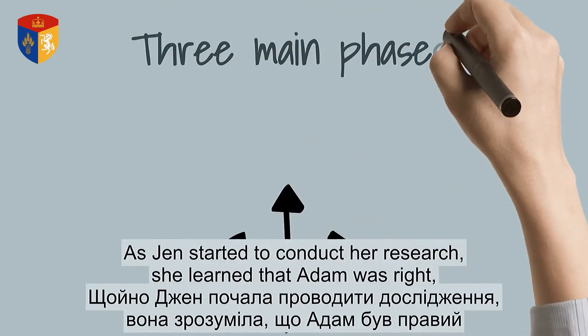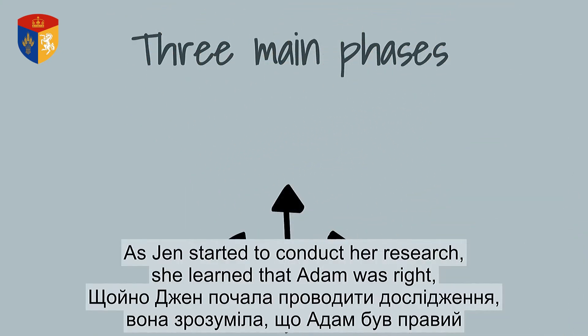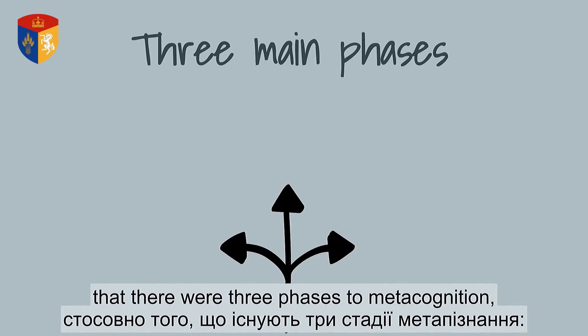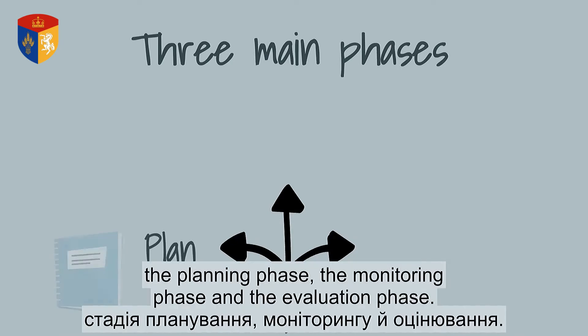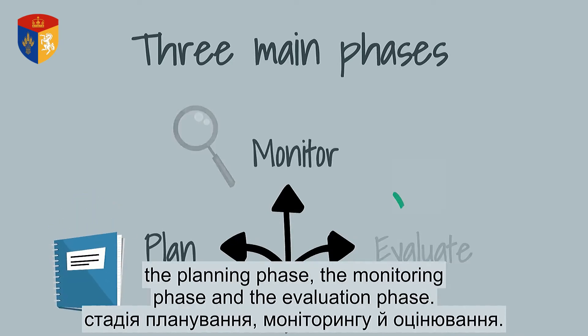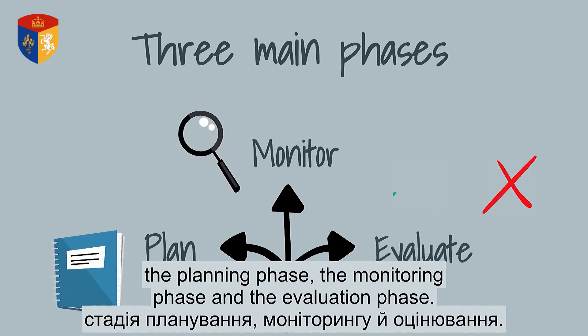As Jen started to conduct her research, she learned that Adam was right — there were three phases to metacognition: the planning phase, the monitoring phase, and the evaluation phase.